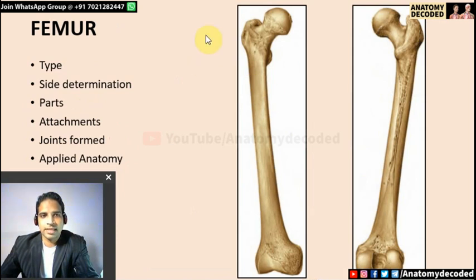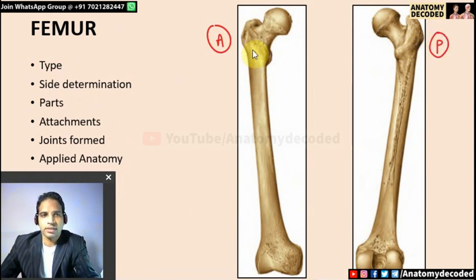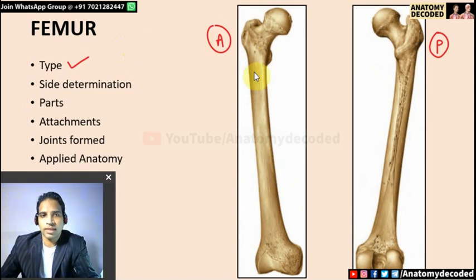Now let's move on to the femur. Here we can see the right femur viewed from the anterior aspect and the posterior aspect. Femur is an example of a typical long bone — it has two ends and an intervening shaft. For side determination, again by three dimensions.